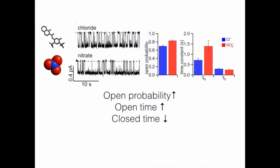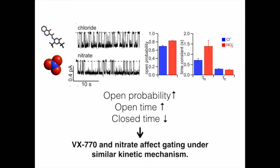Similar to nitrate, VX-770 boosts the open probability of wild-type CFTR with normal gating machineries, as well as a swath of CFTR mutants including G551D and ΔNBD2, which exhibit various gating defects. So we hypothesize that VX-770 and nitrate potentiate CFTR through a common kinetic mechanism.